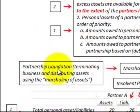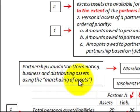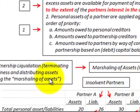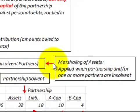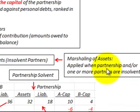Here we're going to be looking at a partnership liquidation where the partnership is terminating its business and distributing its assets, and we're going to look at how we'd apply the marshalling of assets doctrine. Marshalling of assets is applied when the partnership and/or one of the partners is insolvent.